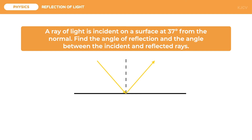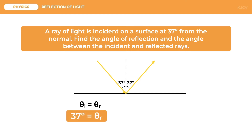We can identify the given quantity as 37 degrees. We need to be careful about what to label 37 degrees, because it can either be the angle from the surface or the angle from the normal. Since it is clearly stated in the problem that it is from the normal, 37 degrees is our angle of incidence. Following the law of reflection, theta sub i is equal to theta sub r, so our angle of reflection is also 37 degrees. For the second unknown, we add the two angles, giving us 74 degrees as the angle between the two rays.